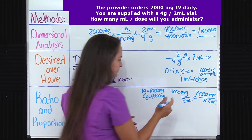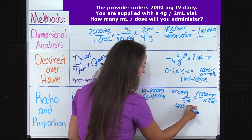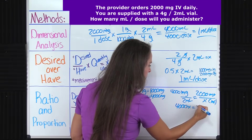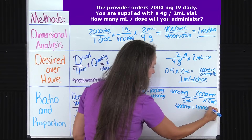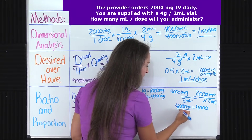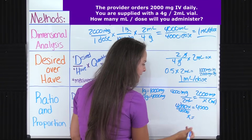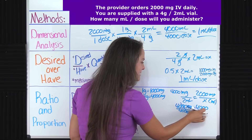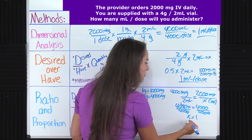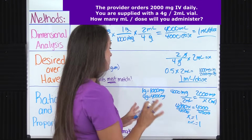So 4000 times X gives us 4000X. Bring the equal sign down. Two times 2000 gives you 4000. We want to get X all by itself, so we're going to divide both sides by 4000. That gets rid of 4000 and X is all by itself. Dividing the other side gives us one. X was milliliters, so the answer is one milliliter.